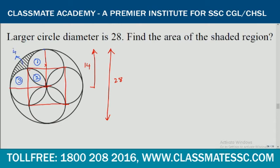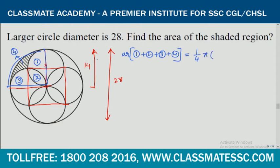Let the shaded region be 4. So regions 1 plus 2 plus 3 plus 4 is nothing but a quarter circle of the larger circle. One fourth of the area of the larger circle equals one fourth of π times radius squared, where radius is 14. The area of regions 1, 2, 3, and 4 equals one fourth of π times 14 squared.